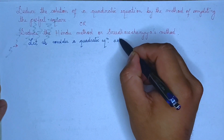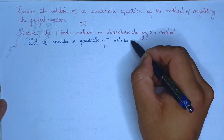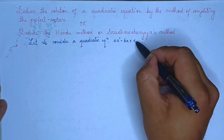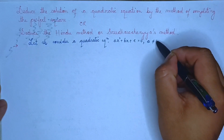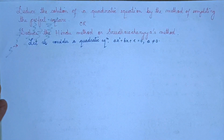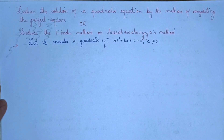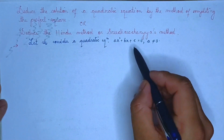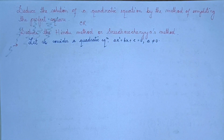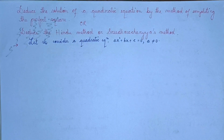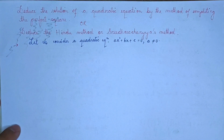Let us consider a quadratic equation: ax squared plus bx plus c is equal to 0. This is the quadratic equation we will work with.